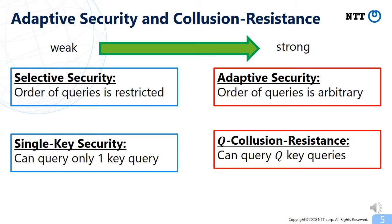There are several flavors of security for CPRF. In this work we consider two axes of security strength. The first is selective security versus adaptive security. In adaptive security, the adversary can make queries in arbitrary order, whereas in selective security the order is restricted. So adaptive security is stronger than selective security. The second axis is single-key security versus Q-collusion resistance. In Q-collusion resistance, the adversary can make at most Q key queries, while in single-key security only one key query is allowed. If Q is larger than 1, Q-collusion resistance is stronger than single-key security. Ideally, the optimal security notion is adaptive and Q-collusion resistant for any polynomial Q.